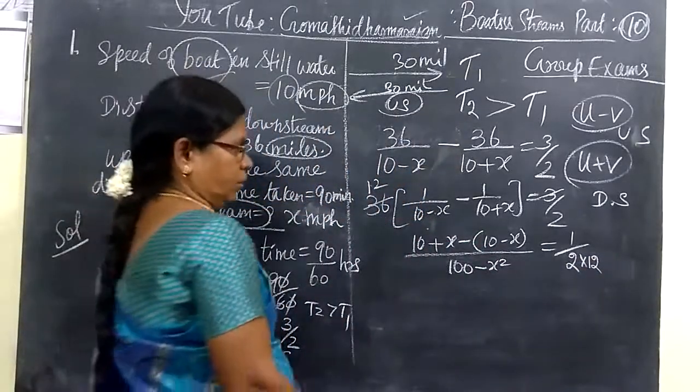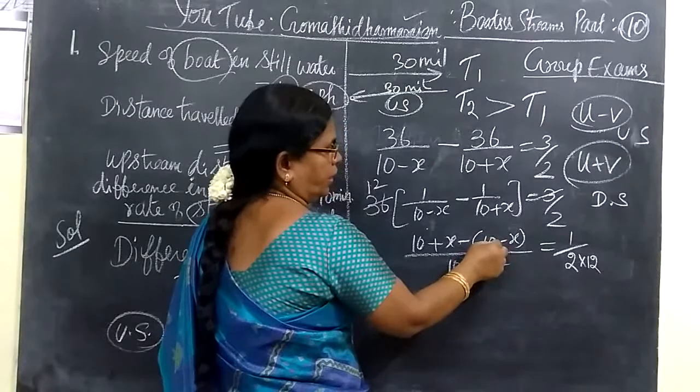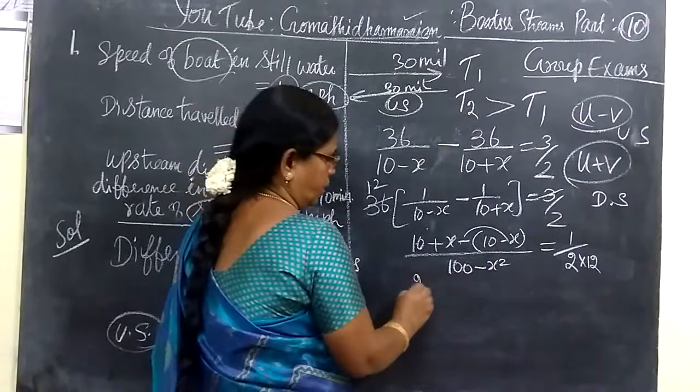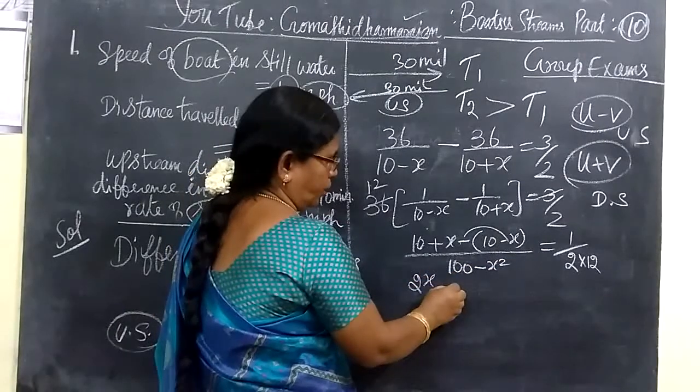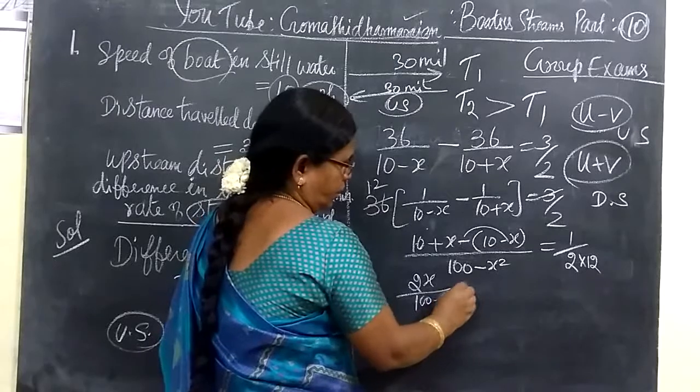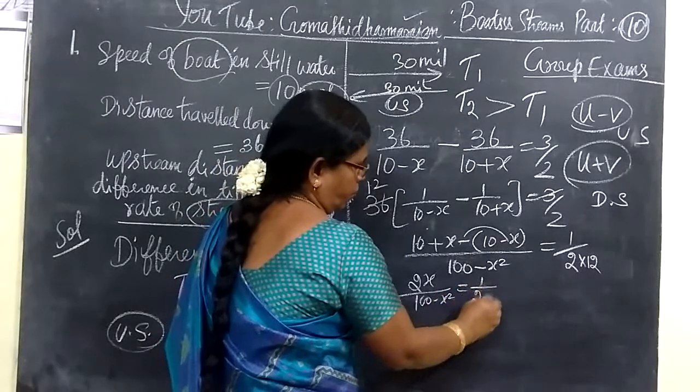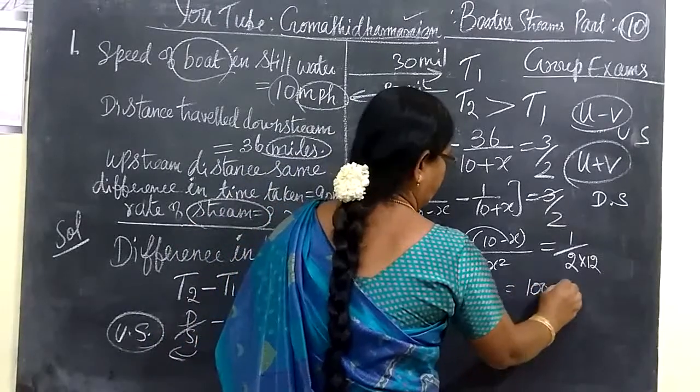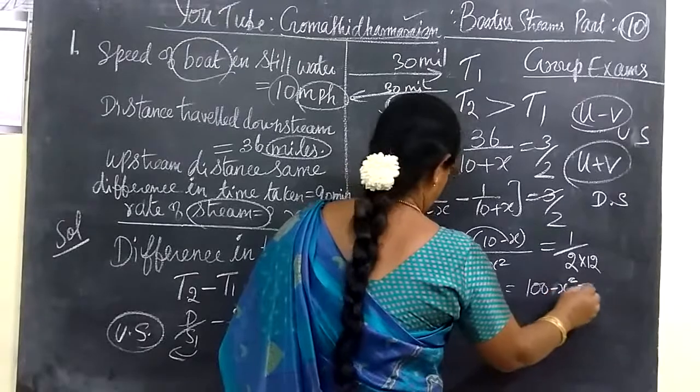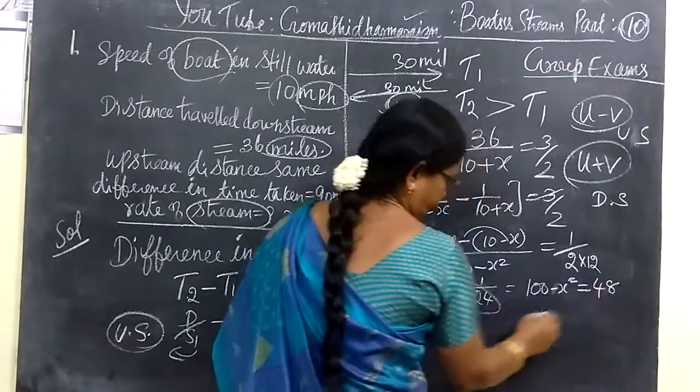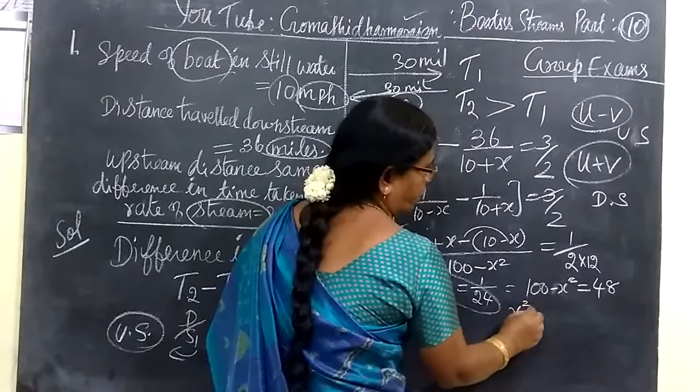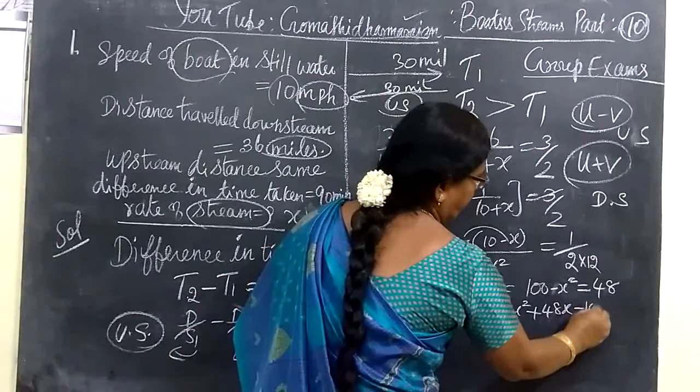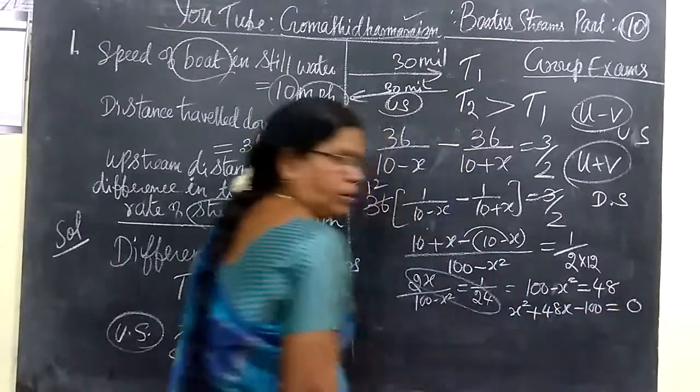So, now you can write 2X over 100 minus X squared equals 3 by 2. So, if you cross multiply, you're getting 100 minus X squared equals 48. So, X squared plus 48 minus 100. So, this equals zero.